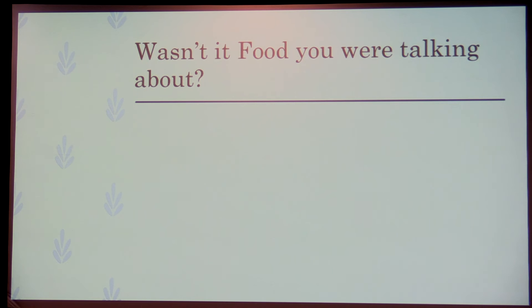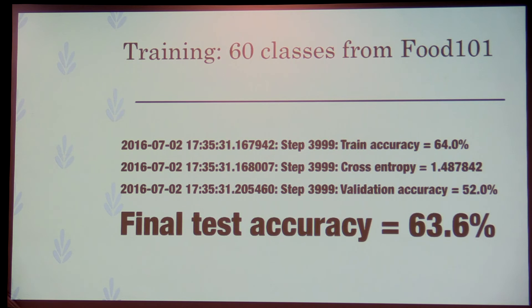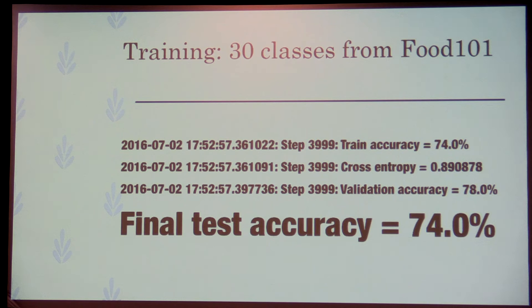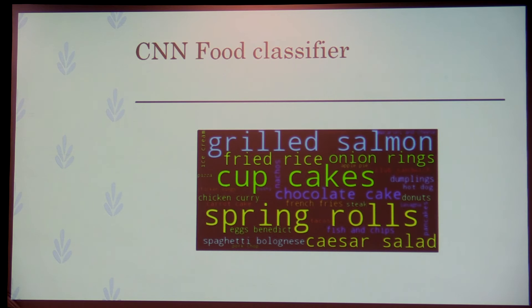So instead of the flowers dataset I used the Food-101 dataset. I reduced from 101 classes down to 60, mostly because many classes in Food-101 are exotic foods not really relevant to an Irish daily diet. With 60 classes I got an accuracy of 63.6% — much better than my 8%. If you go down to 30 classes, you get an accuracy of 74%, which is pretty good. Looking at the word cloud, it looks pretty good — cupcakes and spring rolls, apparently that's what people eat.